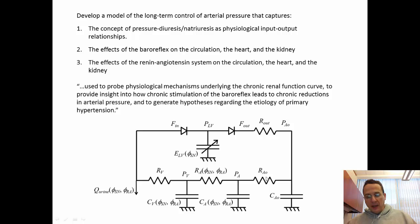And we have resistors and capacitors representing different lumped compartments of the circulation. And these variables phi represent the sympathetic nervous tone and the renin-angiotensin system, which have influences on the resistances and the compliances in the circuit. So this is the backbone of the model.